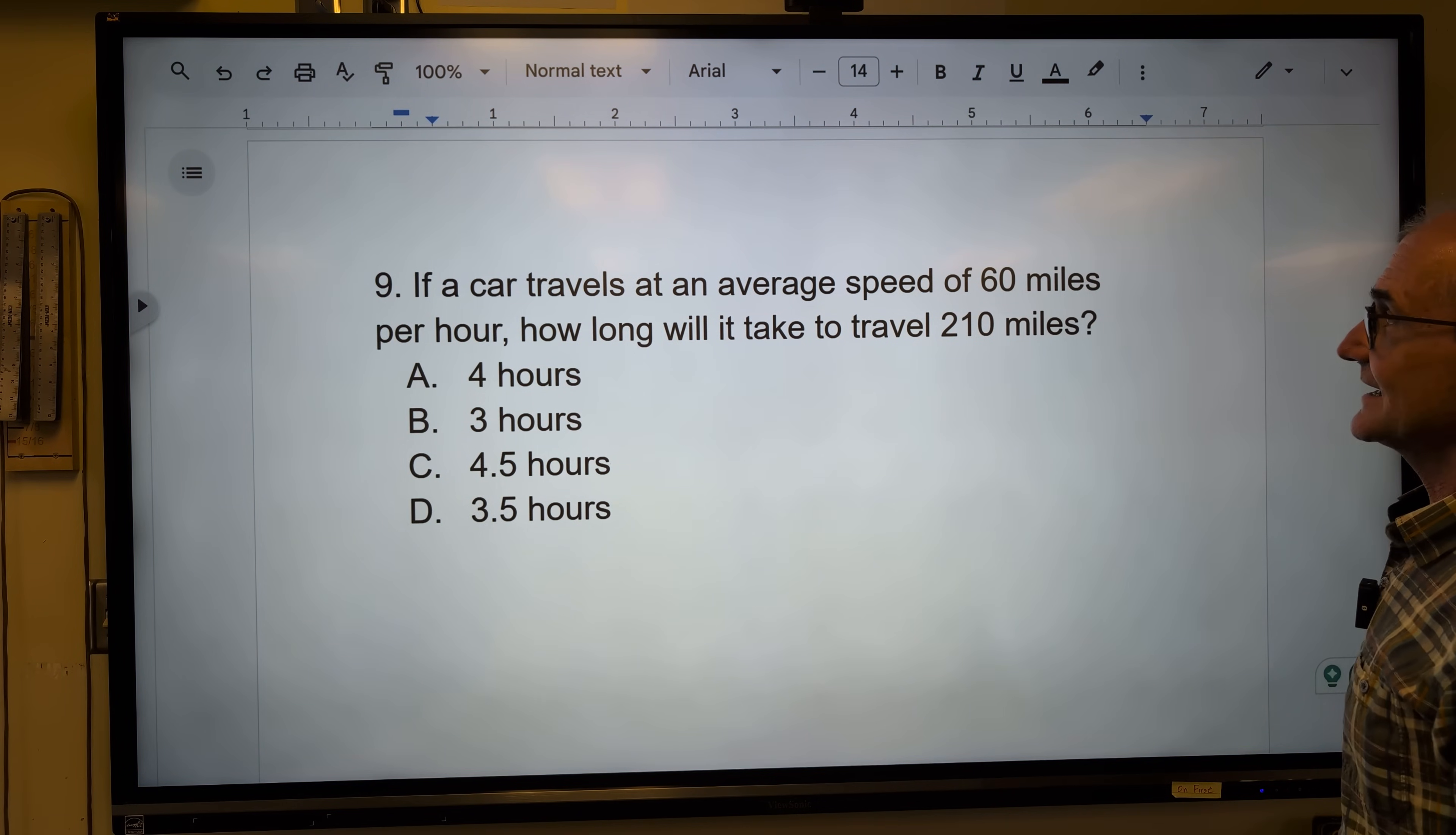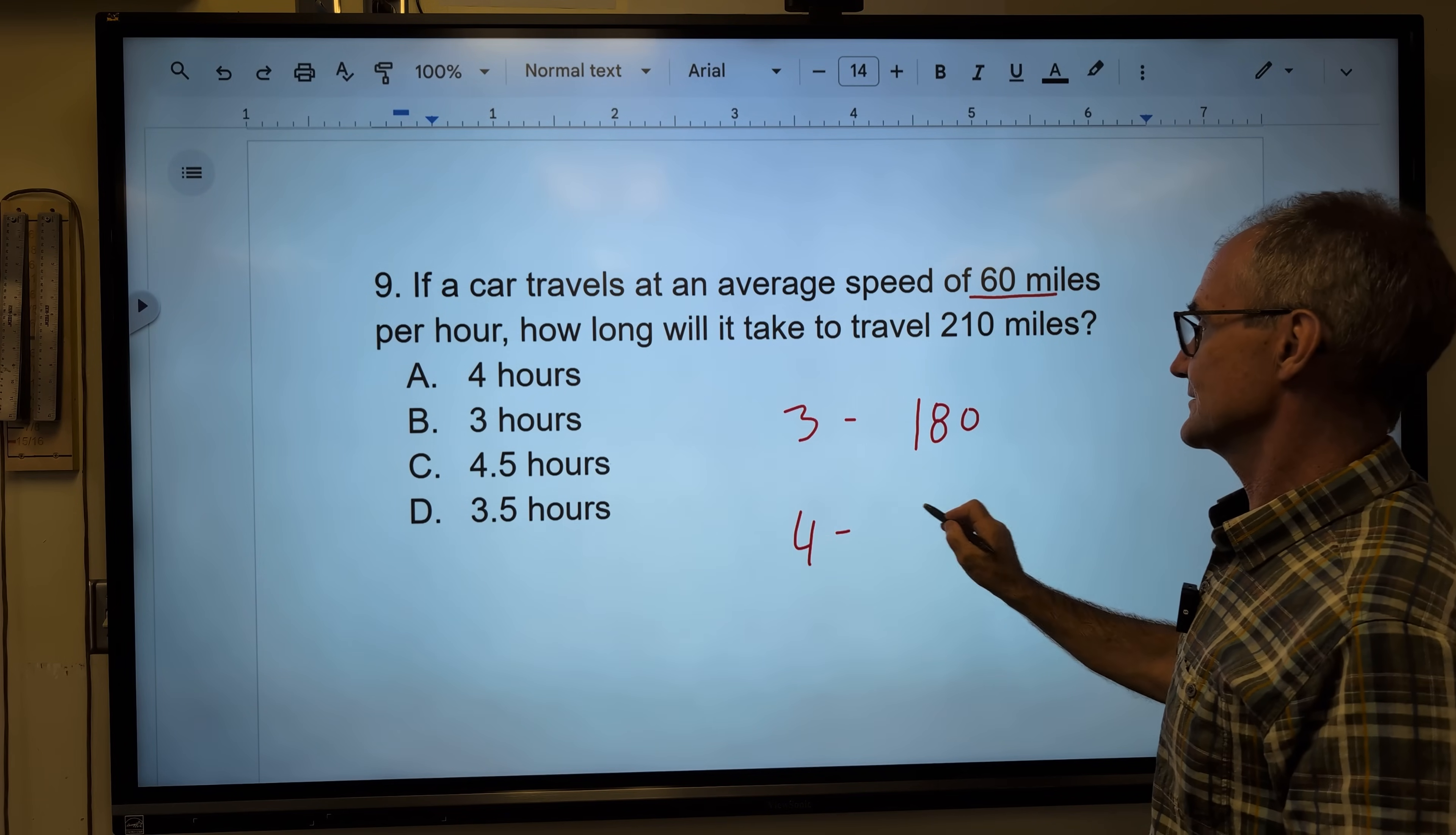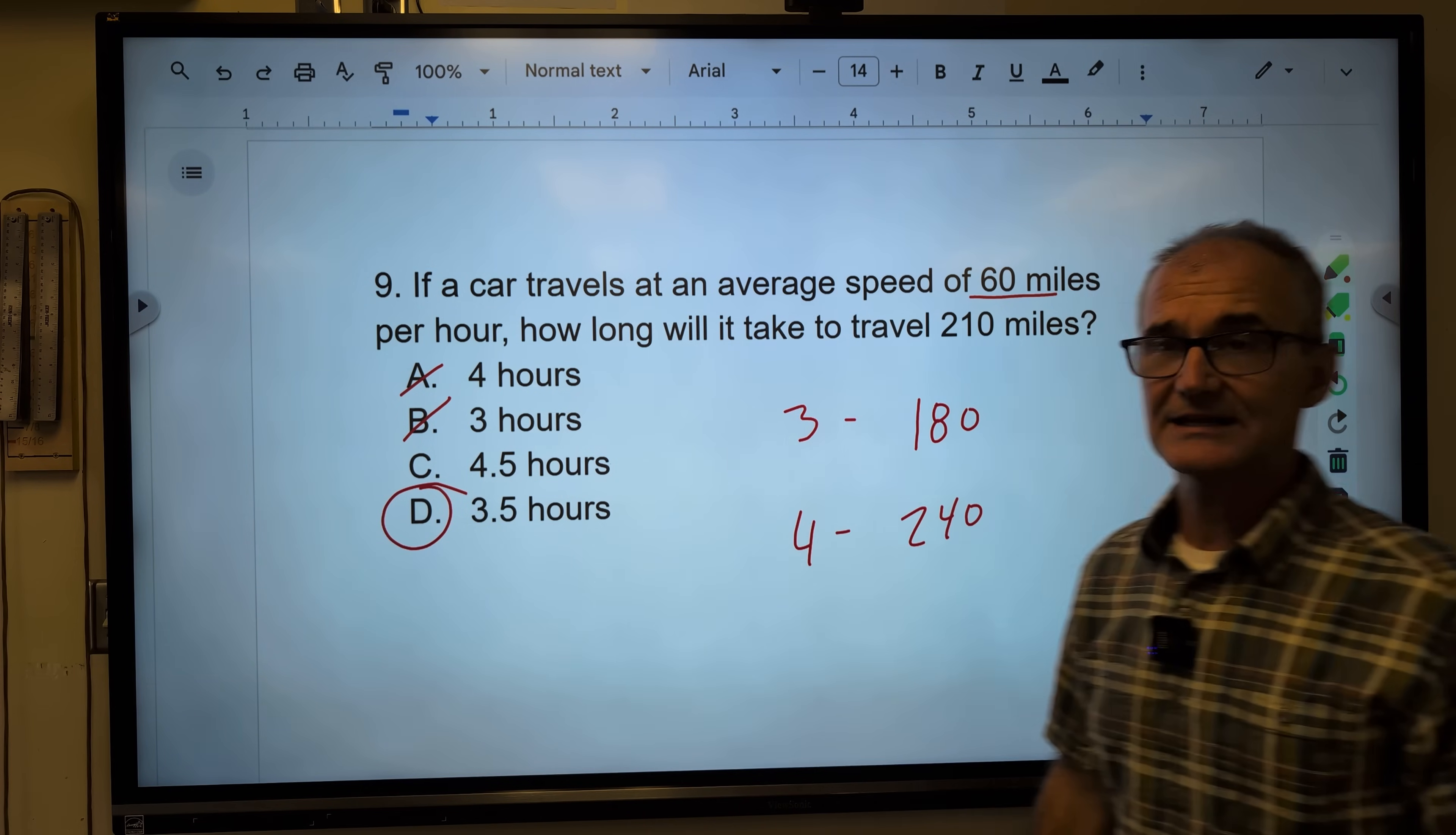A car travels at an average speed of 60 miles per hour. How long will it take to travel 210 miles? Well, let's do 60 times 3. In 3 hours, it'll go 180 miles. Let's do 60 times 4. In 4 hours, it'll go 240 miles. Well, 3 and 4 are not 210, so I know it can't be that. 210 is in between these numbers, so my answer has to be between these numbers. My answer has to be between 3 and 4, so it has to be 3.5.